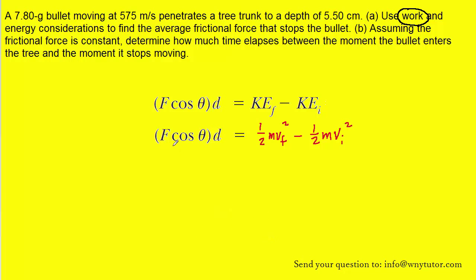So, why don't we go ahead and divide both sides of this equation by cosine theta times displacement. And of course those will cancel on the left side of the equation. And so now we have the equation solved for the frictional force. The final velocity will be zero, since the bullet is coming to rest. The mass of the bullet was given, we just have to make sure that we use kilograms, not grams. So, of course, to convert the 7.8 grams into kilograms, we just multiply by 10 to the minus 3. That'll put it into kilograms.